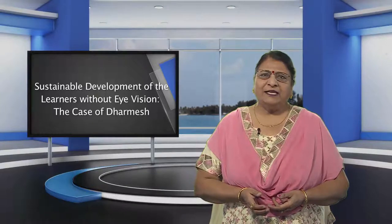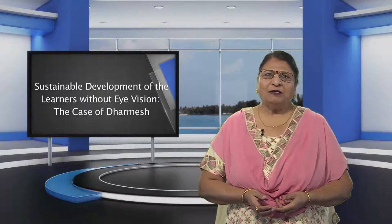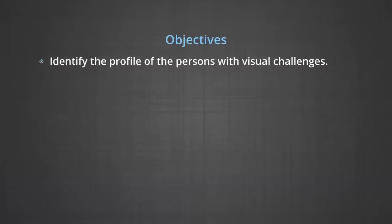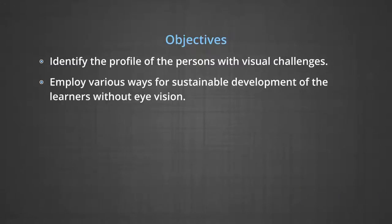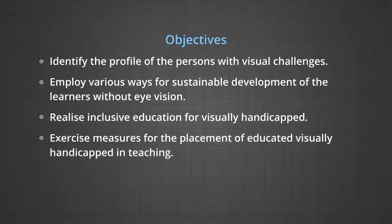Let us delineate the objectives first. After going through this module, the learners will be able to identify the profile of the persons with visual challenges, employ various ways for sustainable development of the learners without eye vision, realize inclusive education for visually handicapped, and exercise measures for the placement of educated visually handicapped in teaching.